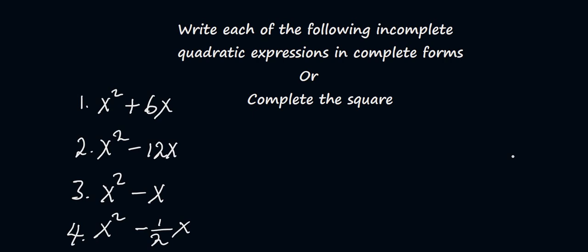So we have four questions here that we need to look at. The first one: x squared plus 6x. The second one: x squared minus 12x. The third one: x squared minus x. And the final one: x squared minus one-half x. So we'll be looking at each of them one after the other. Let's begin.